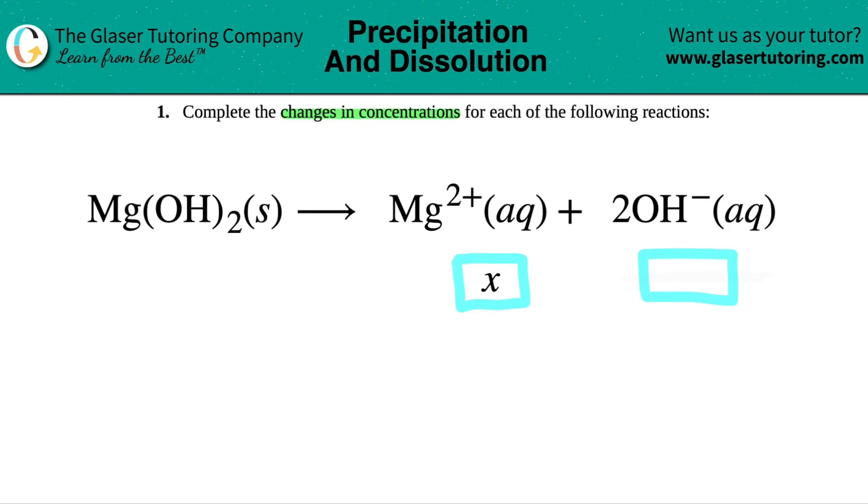This all comes from the coefficients, also known as the mole ratios. The coefficients, remember, are always the big numbers in front of your balanced equation.